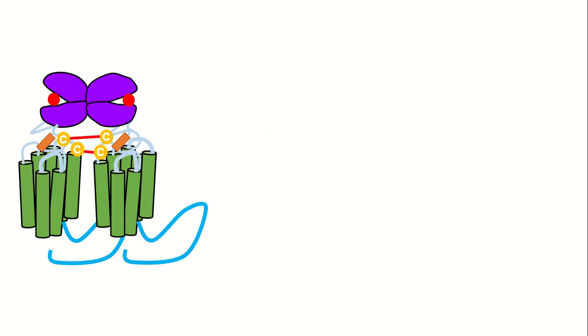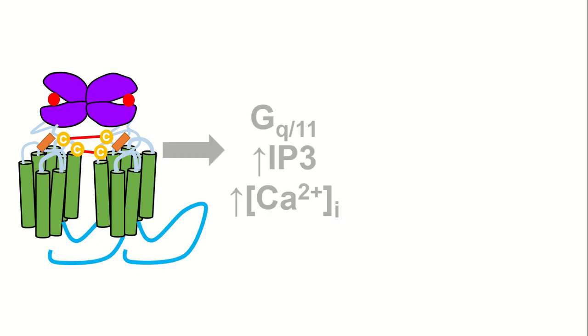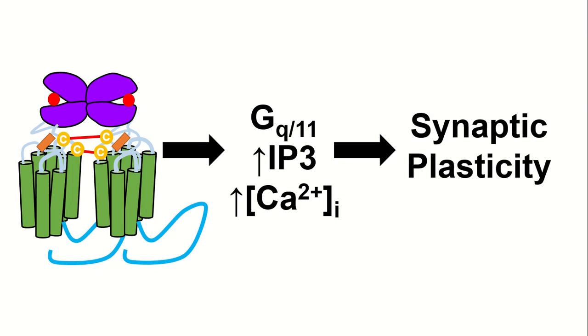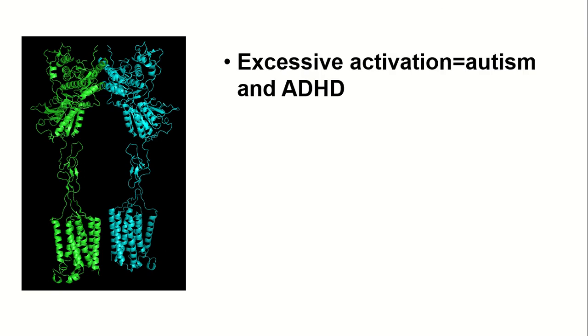MGluR5 signaling regulates synaptic plasticity, memory, and learning and is also critical for synaptogenesis and the patterning of neural circuits. Thus, this regulation of MGluR5 is associated with several synaptic disorders. Over-activation of MGluR5 has been linked to autism and ADHD.